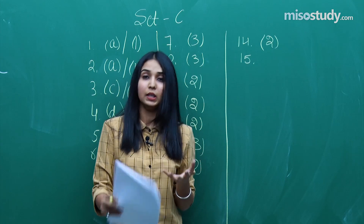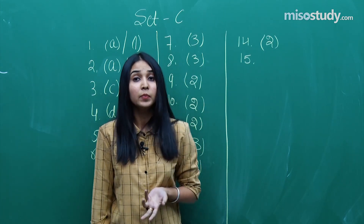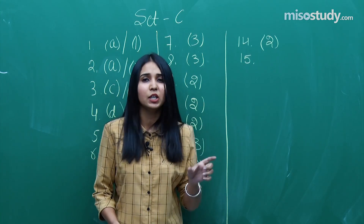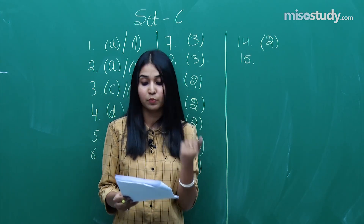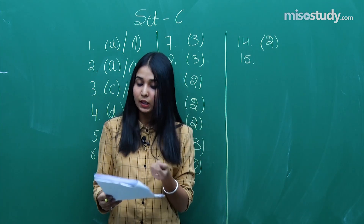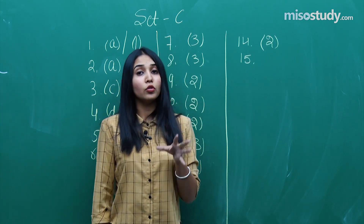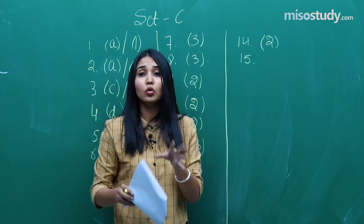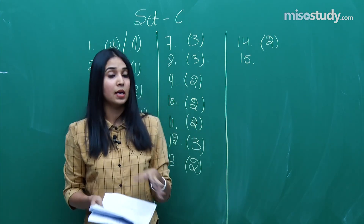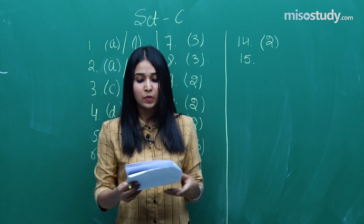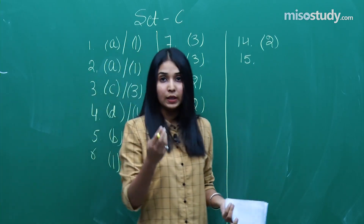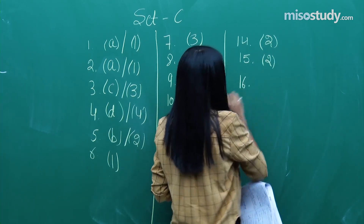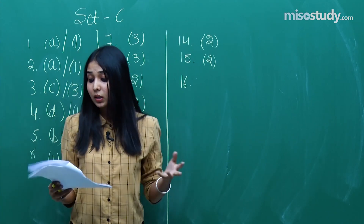Question number 15 was from chemical bonding — from the very basics, covering different types of bonds. A really direct question, though the options were designed to confuse you. If you had clarity on the basic concepts you could have done it easily. The answer for question number 15 is option 2.